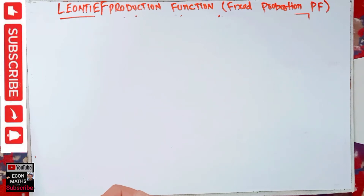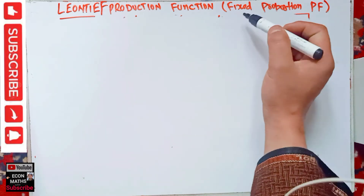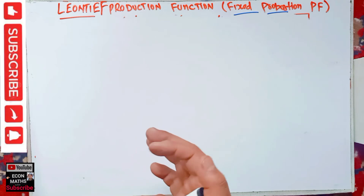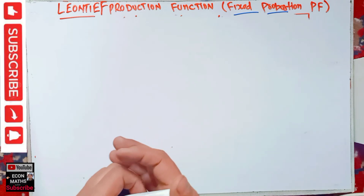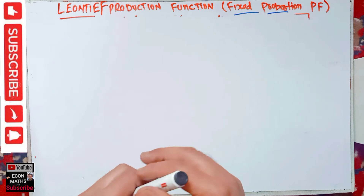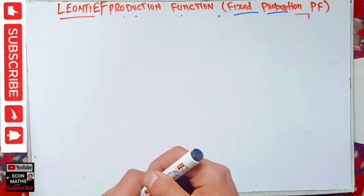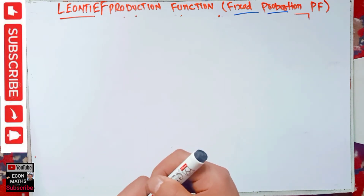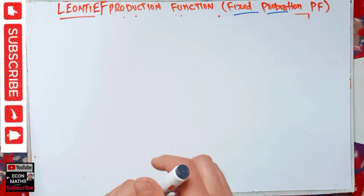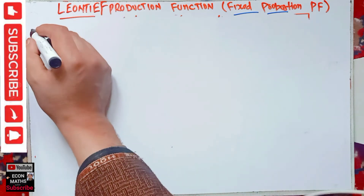In this video on mathematical economics, we will discuss the Leontief production function, which is also called the fixed proportion production function. This production function implies the factors of production are used in fixed proportions and there is no substitutability between the factors.